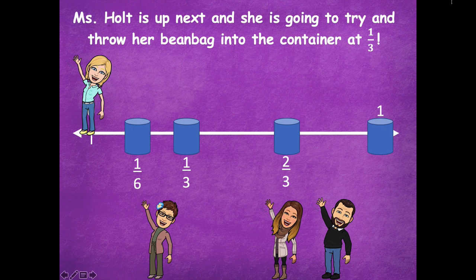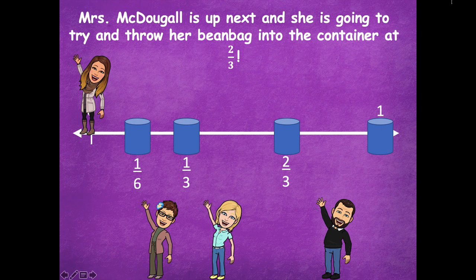Mrs. Holt is up next and she is going to try and throw her bean bag into the container at one-third. She nailed that one too! Probably because that's closer to zero, so it's probably easier to get in there.